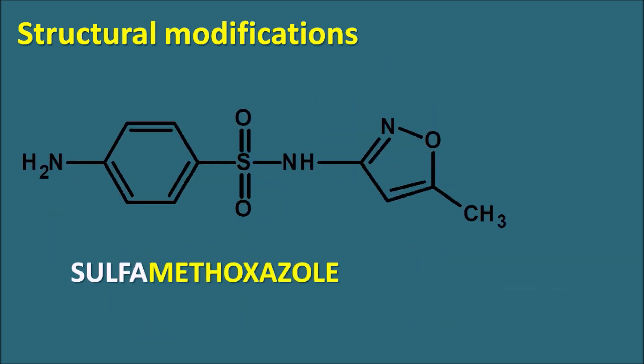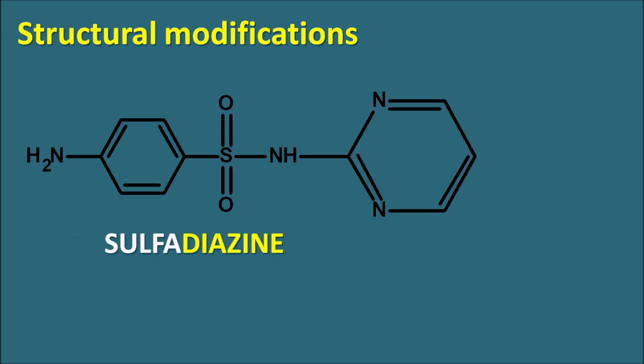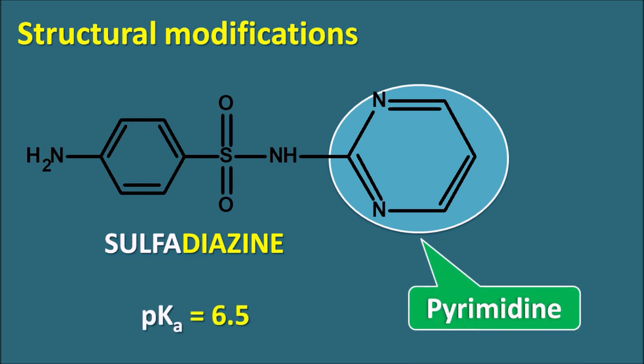Sulfamethoxazole also uses the isoxazole (1,2-oxazole) ring system, but it is attached at the third position to the amide nitrogen rather than the fifth. This positional difference changes the pKa to approximately 6.1, compared to sulfisoxazole's 5.0 — demonstrating how the position of ring attachment affects pKa. Sulfadiazine contains a pyrimidine ring (with two nitrogens) and has a pKa of ~6.5.